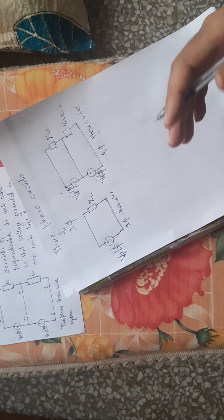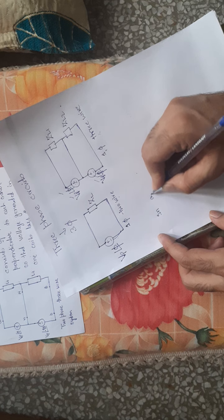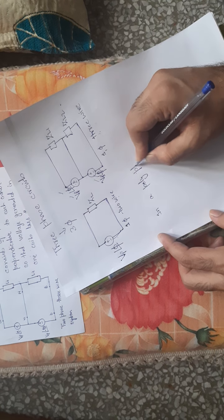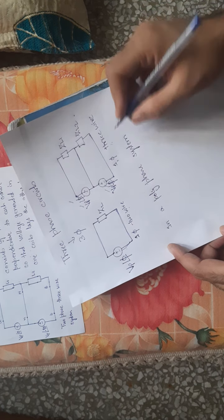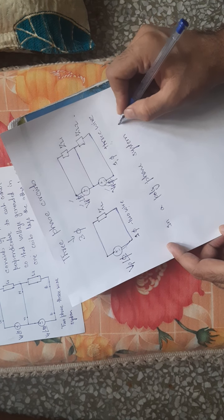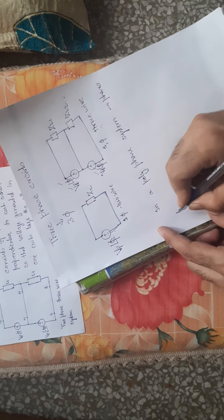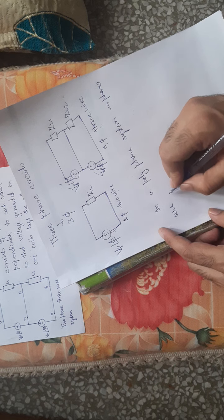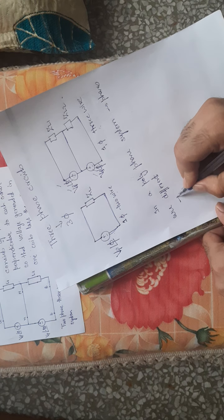Poly means more than one phase. In a polyphase system, the phases are different — though amplitudes are same, the phases are different.